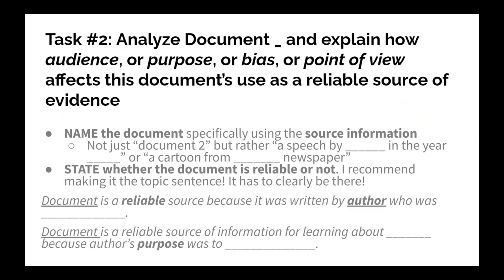There are really two things you're being asked to do: you're practicing sourcing skills by explaining audience, purpose, bias, or point of view, and you're also talking about reliability. First, name the document specifically — be very clear. The photograph, the letter, the speech by this person. Use the source info that's given to you. Avoid just saying 'document two' because you're analyzing this as an actual document, not just doc two. You're analyzing this person's thoughts or ideas. You'd say something like 'a speech by so-and-so in the year whatever' or 'this cartoon from this newspaper.' Be specific.